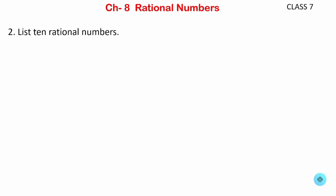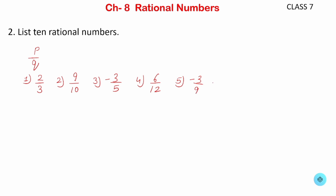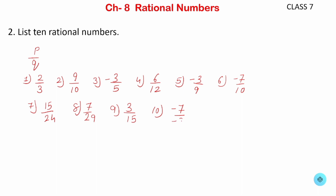Now the next question: list 10 rational numbers. So we will write 10 rational numbers in the form p upon q. First one: 2 upon 3. You can write any numbers — 9 upon 10, minus 3 upon 5, 6 upon 12, minus 3 upon 9, minus 7 upon 10, minus 3 upon 10, minus 7 upon minus 3. So like this you can write any 10 rational numbers.